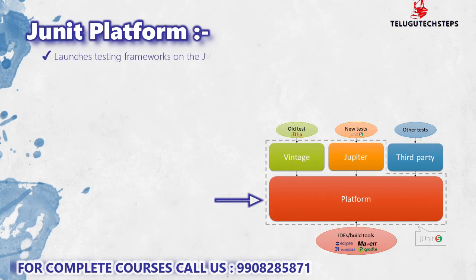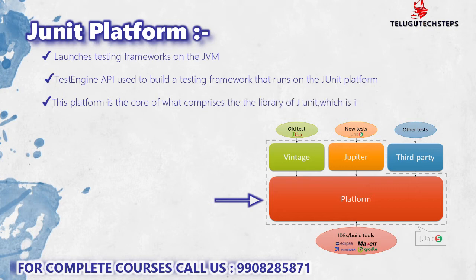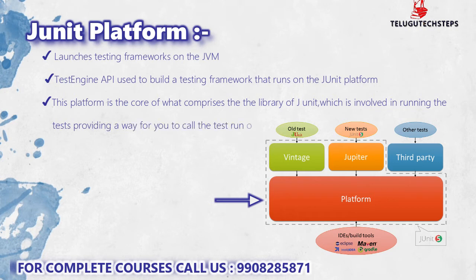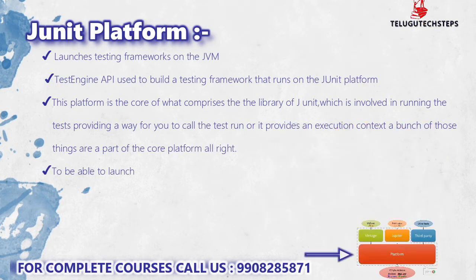JUnit Platform — when we use a particular JUnit framework, the JUnit Platform is used. It launches the testing framework on the JVM. The Test Engine API is used to build the testing framework that runs on the JUnit Platform, so any test you write needs to run on the JUnit Platform.